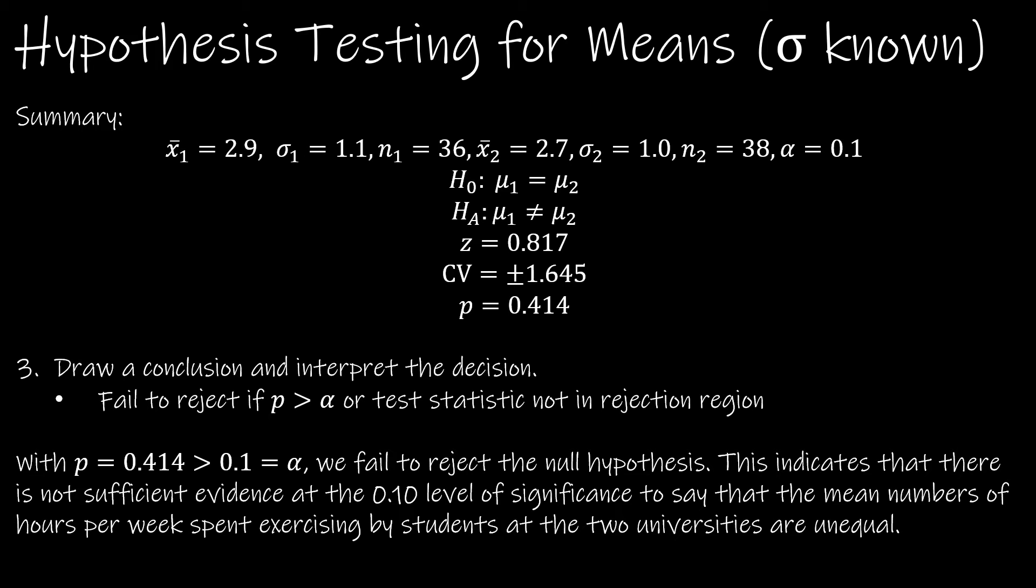So p is greater than alpha, and the test statistic is not in the rejection region. We can see 1.645 would be further to the outside than 0.817. So with p greater than alpha, we fail to reject the null.